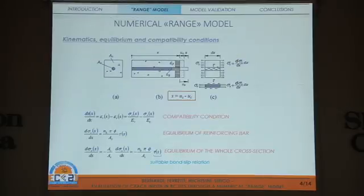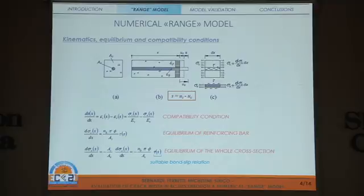The model assumes that slip occurs between the reinforcement bar and concrete. Slip is defined as the difference between the displacements of two points that were originally in contact belonging to the two materials. This slip causes the presence of tangential stresses — the bond stresses — which are related to slip by means of a suitable bond-slip relation.